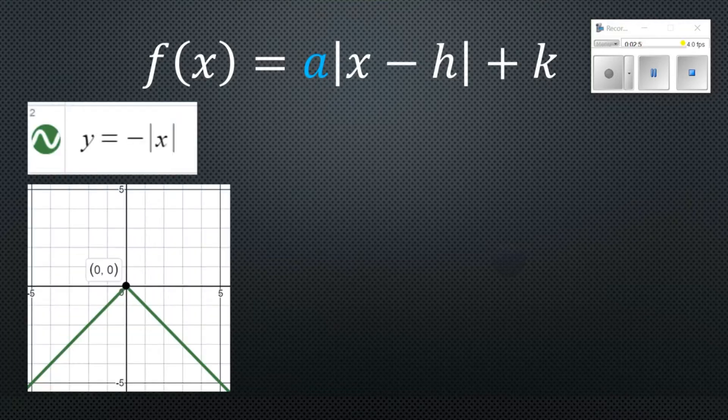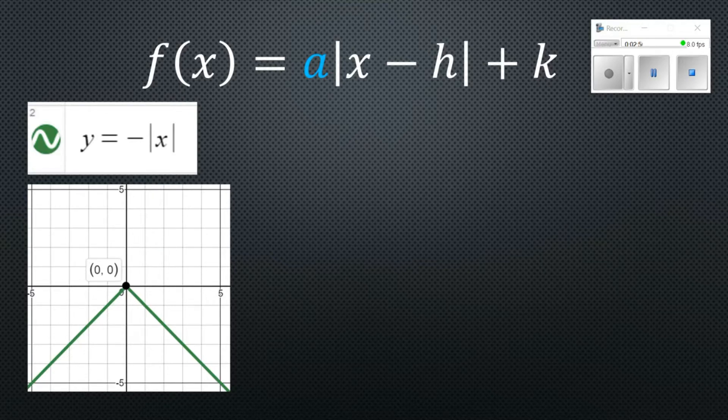Here's where we put a negative out front of our parent function, y equals absolute value of x. It's going to flip it upside down, but it'll leave the vertex at 0, 0 because there's nothing inside like the h value or k on the outside. It just flips it upside down.